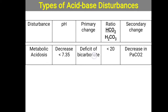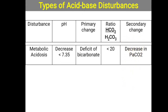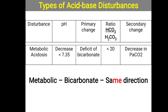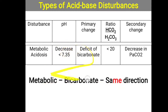The primary change in metabolic acidosis is bicarbonate deficiency. To compensate, a secondary change occurs: the body tries to eliminate more carbon dioxide, so partial pressure of CO2 decreases. Remember: secondary changes always go in the same direction as the primary changes. Since bicarbonate and pH are both decreasing (same direction), this confirms metabolic acidosis — a trick that can permanently solve identification of any acid-base disorder.